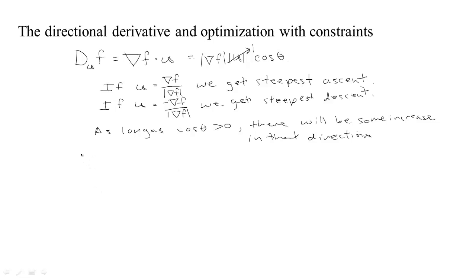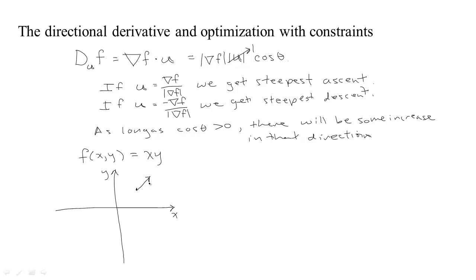Suppose we have a function of two variables, say f(x, y) = x times y. We can look at it in input space — the xy-plane — where for each point there's a value of f. At a given point the gradient of f points in the direction of steepest ascent. If we head out in some direction u where the angle between u and the gradient is less than 90 degrees, the cosine is positive and we get an increase in f.